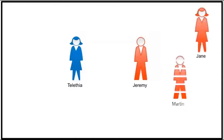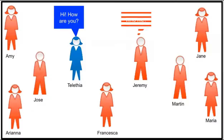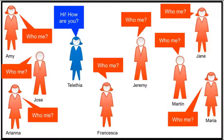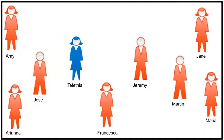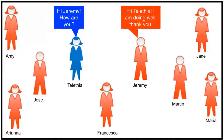But what if there are more than just two people in the room? Now if Talithia says, 'Hi, how are you?' each person in the room is wondering who Talithia is speaking to. To ensure that Jeremy knows Talithia is speaking to him, Talithia will include Jeremy's name in the message: 'Hi Jeremy, how are you?' Now Jeremy knows Talithia is talking to him and will respond using Talithia's name when speaking to her.